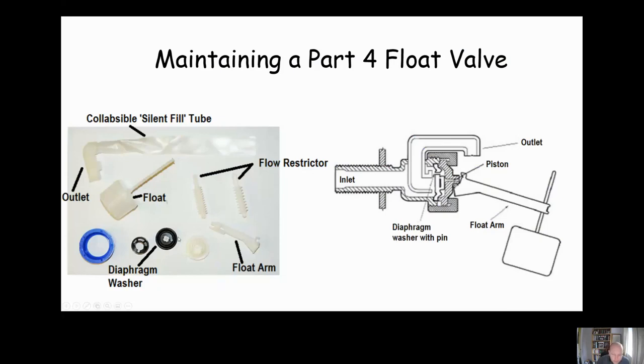The key difference that we can see with a part four or Torbek type float valve—some people also call them equilibrium type float valves—is the fact that they've got a small float because they don't need as much force to lift up the arm and to force the float valve closed, because they've got equilibrium, balanced pressures on each side of the diaphragm when it's open.